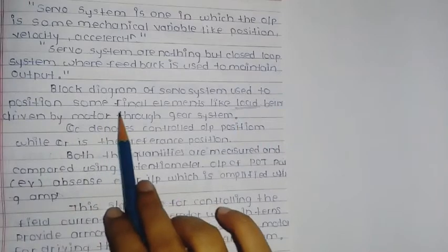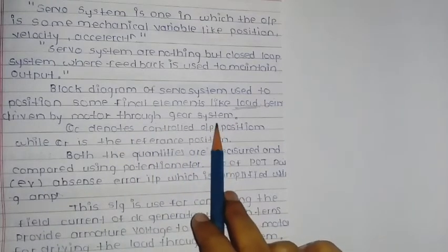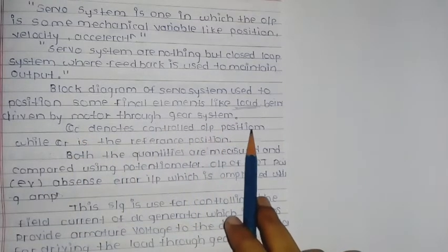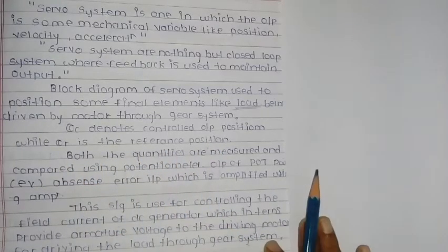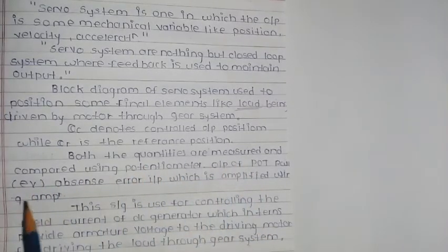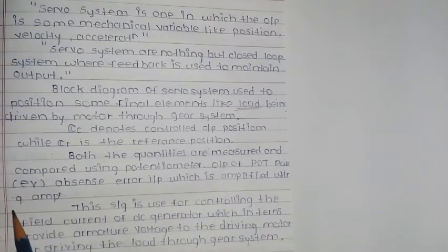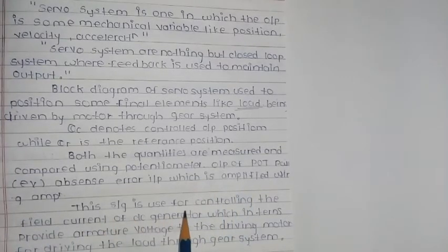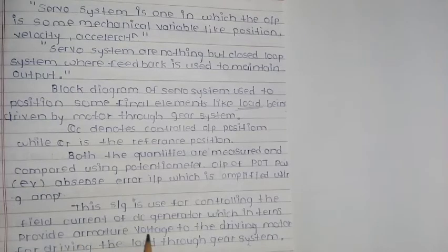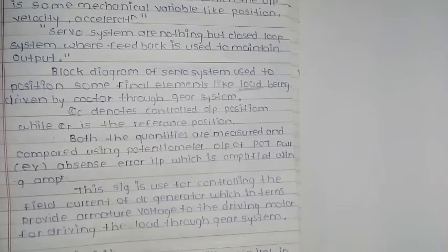The block diagram of the servo system is used to position final elements like a load being driven by the motor through the gear system. QC denotes the controlled output position, QR is the reference position. Both quantities are measured and compared using the potentiometer. The output error signal is amplified, then used for controlling the field current of the DC generator, which provides armature voltage to the driving motor for driving the load through the gear system.